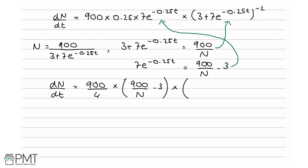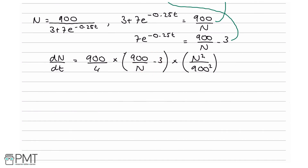(900 over n) to the minus 2 is the same as n squared over 900 squared, since the negative exponent inverts the fraction. This resembles the (300 minus n) form we need. Taking out a factor of 3 over n from (900 over n minus 3) gives 3 over n times (300 minus n), because 900 divided by 3 is 300, minus 3 divided by 3 is minus 1, and the 1 over n factor brings out n. So we have 900 over 4 times 3 over n times (300 minus n) times n squared over 900 squared.